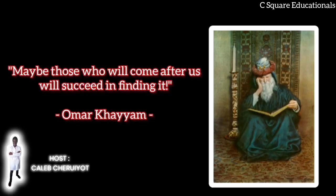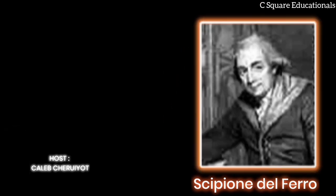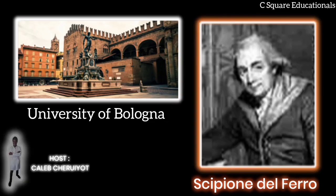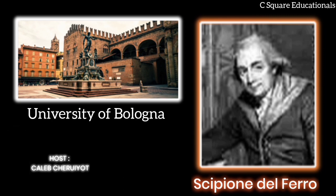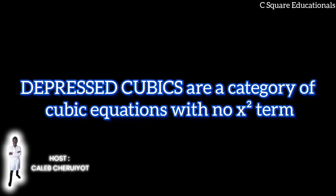No wonder Omar Khayyam wrote: 'Maybe one of those who will come after us will succeed in finding it.' Now comes another character in our story — Scipione del Ferro. Scipione del Ferro is a mathematics professor at the University of Bologna. Around the year 1508–1512, he finds a method to solve depressed cubics. Depressed cubics are a category of cubic equations with no x² term. So what does he do after solving a problem that has obsessed mathematicians for thousands of years — one considered impossible by Leonardo da Vinci's math teacher? He tells nobody.